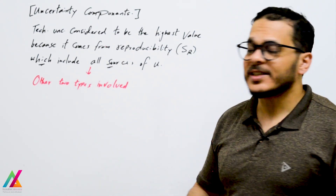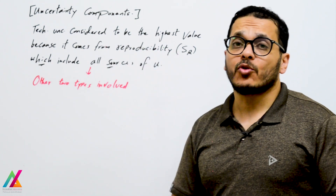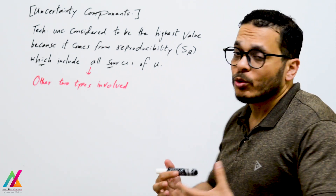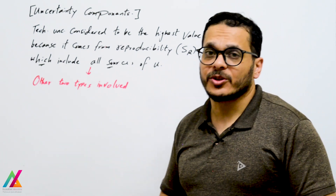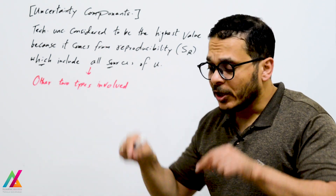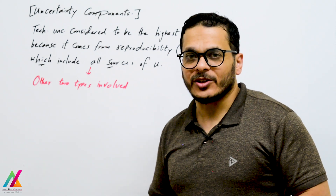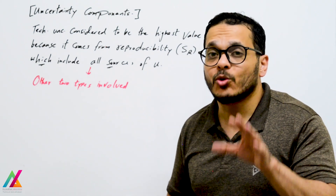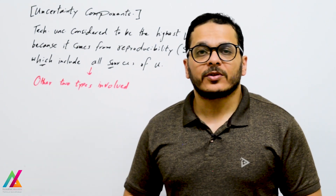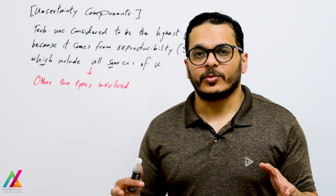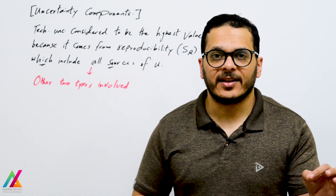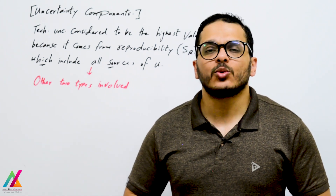Technical uncertainty, matrix uncertainty, and distributional uncertainty are combined together to get the overall uncertainty. Technical uncertainty is considered to be the highest value among all these types because it comes from reproducibility and includes all sources of uncertainty during the whole measurement process. The other two — matrix uncertainty and distributional uncertainty — are also captured during reproducibility, so you can calculate measurement uncertainty based only on technical uncertainty. Thank you, and see you in the next lecture.